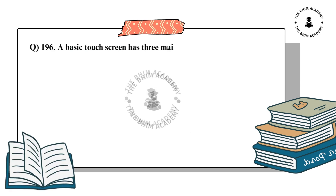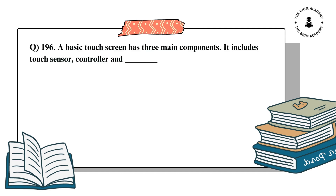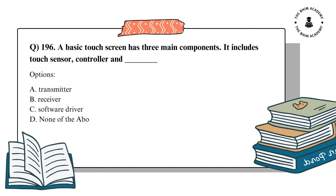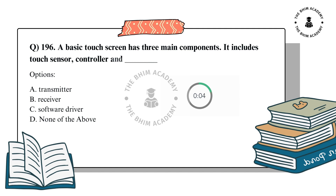Question number 196. A basic touchscreen has three main components. It includes touch sensor, controller, and dash. The options are: A. Transmitter, B. Receiver, C. Software driver, D. None of the above. The correct answer is C. Software driver.